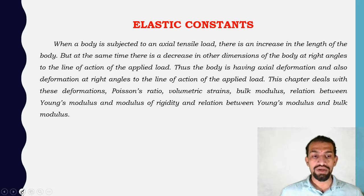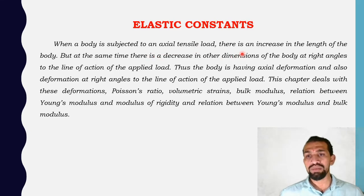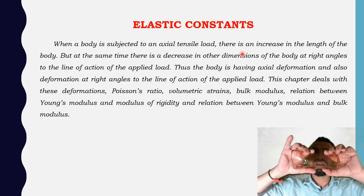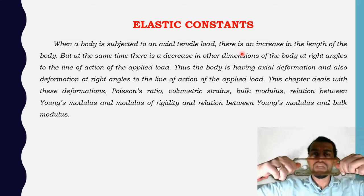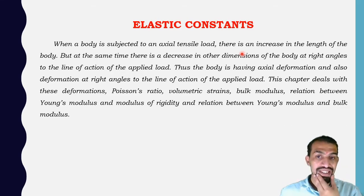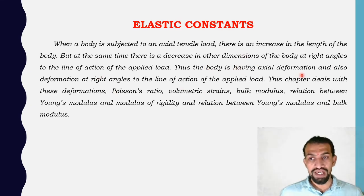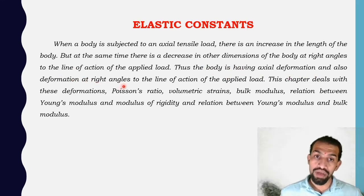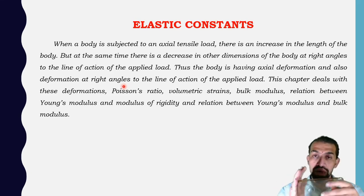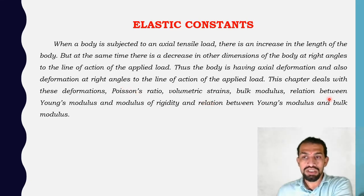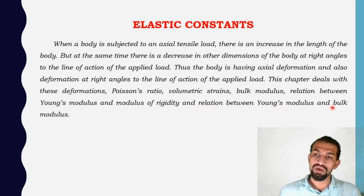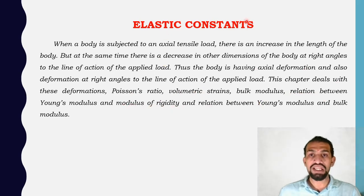Now let us look at elastic constants. An elastic constant describes what happens when a body is subjected to an axial load: there is an increase in length of the body but at the same time a decrease in the other dimension at right angles. The elastic constants we will cover are: Poisson's ratio, volumetric strain, bulk modulus, relation between Young's modulus and modulus of rigidity, and relation between Young's modulus and bulk modulus.